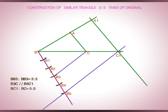According to basic proportionality theorem, BC1 is to BC equals 5 is to 3 and AC is parallel to A1C1. So BA1 is to BA equals 5 is to 3. So A1BC1 is 5 by 3 times of ABC triangle.